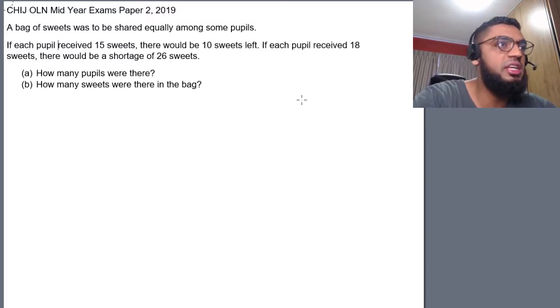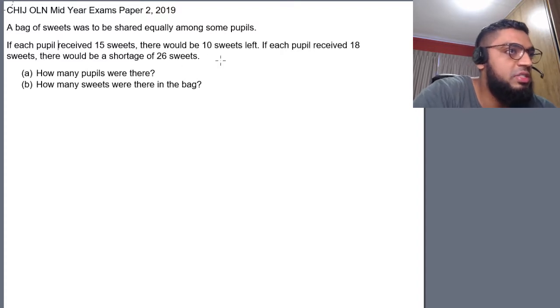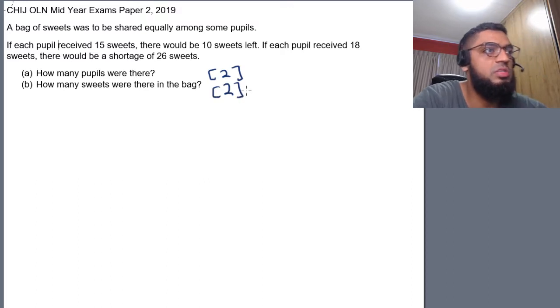A bag of sweets was to be shared equally among some pupils. If each pupil received 15 sweets, there will be 10 sweets left. If each pupil received 18 sweets, there will be a shortage of 26 sweets. Part A, how many pupils were there? Part B, how many sweets were there? I believe this is actually a 2 marks for each part question. So, total 4 marks.